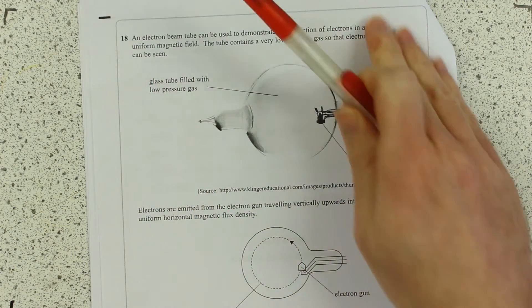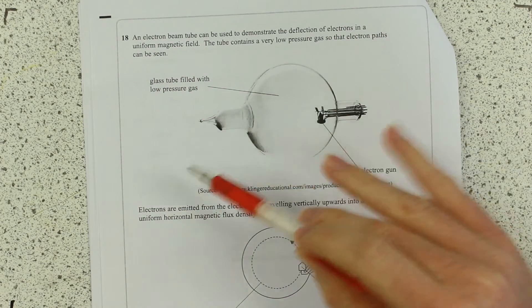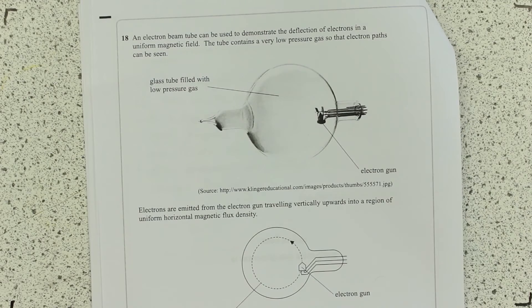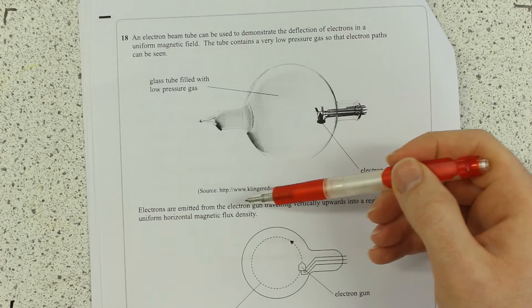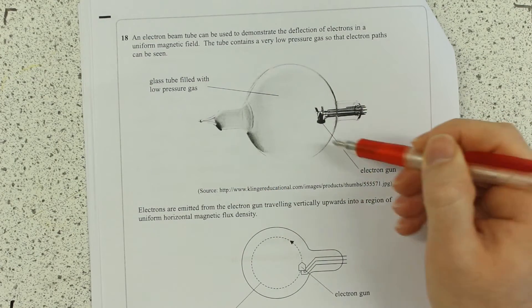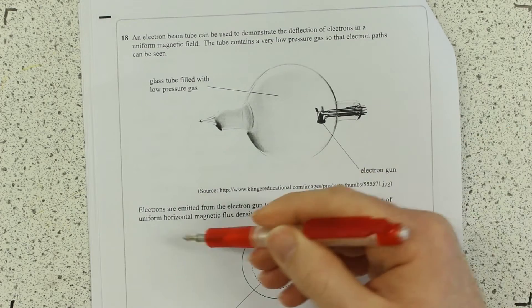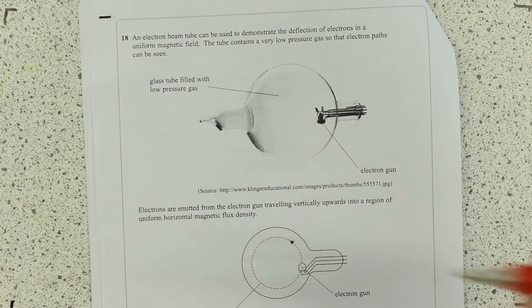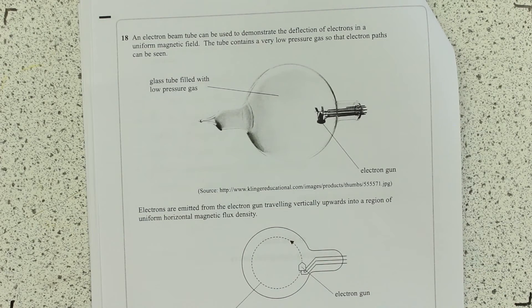An electron tube can be used to demonstrate deflection of electrons in a uniform magnetic field. The tube contains very low pressure gas, so very few particles inside, no collisions for them. The electrons are emitted from an electron gun travelling vertically upwards into a region of uniform horizontal magnetic flux density. Let's just talk about mag flux density being into and out of the page.